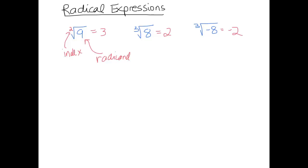So notice, when you have an odd index, you can have a negative or a positive answer. If I were to try to take the square root of negative 9, that would be an even index, I do not get a real number. This would be an imaginary number, I'd get 3i.